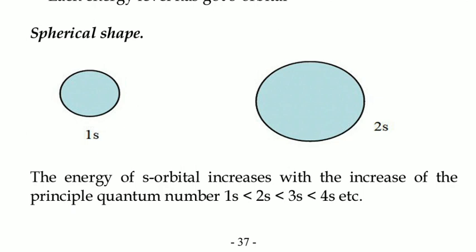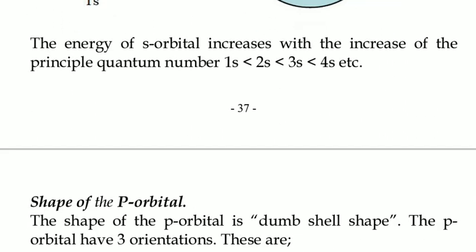So the energy of the S-orbital increases with the increase in the principal quantum number. The energy of 1s is smaller than 2s is smaller than 3s. S-orbital is just spherical and the size of that spherical orbital increases with the increase in the principal quantum number.